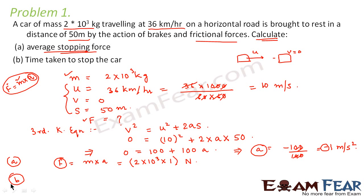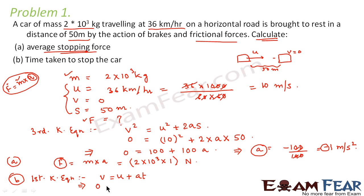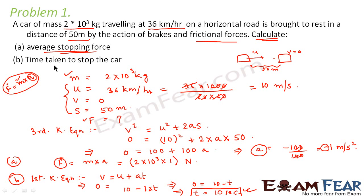In the second part, we are asked: what is the time taken to stop the car? That means after how much time did the car, which was moving with velocity u, come to stop after traveling 50 meters? We use the first kinematic equation: v = u + at. Here v = 0, u = 10 m/s, a = −1 m/s², so 0 = 10 − t, giving t = 10 seconds. After 10 seconds, the car comes to rest.